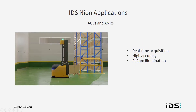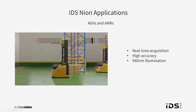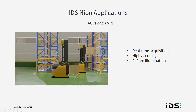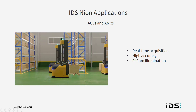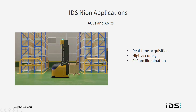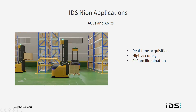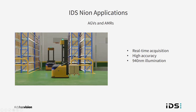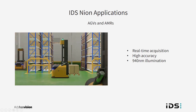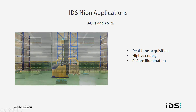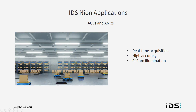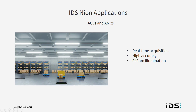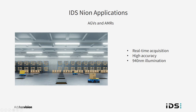Another key application for time of flight is guidance or collision avoidance for automated guided vehicles (AGVs) and autonomous mobile robots (AMRs). With the precise 3D data, real-time acquisition, and 940nm illumination, the Nyon is ideal for these applications as AGVs and AMRs must have fast response times to their environment and not interfere with human operatives who may be in the area. The high quality 3D data means more accurate guidance.